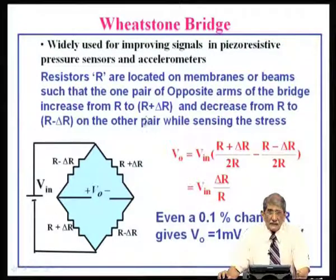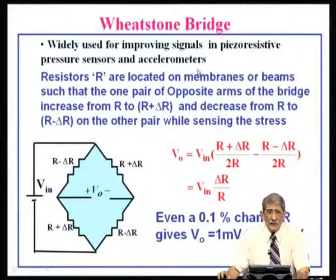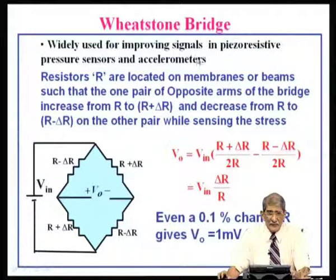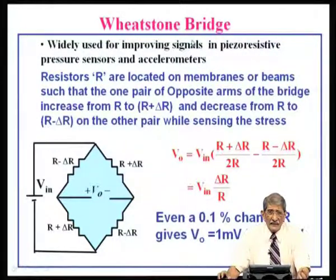First we start with the Wheatstone bridge. It is very widely used for improving signal in piezoresistive pressure sensors and accelerometers. A piezoresistive sensor is a resistor whose value changes when it is subjected to stress. But the change in resistance will be so small that it will be difficult to measure directly. For example, if there is a 1 kΩ resistor and its change is just 1 ohm due to stress, you can hardly measure that change of 1 in 1000.